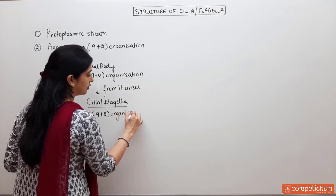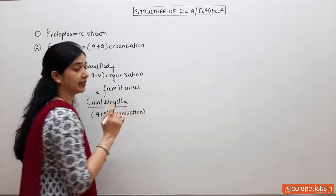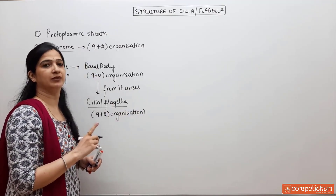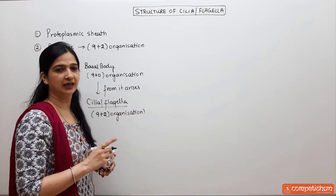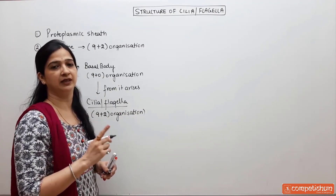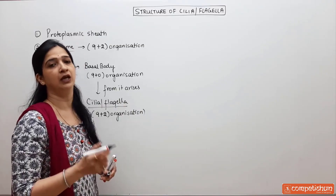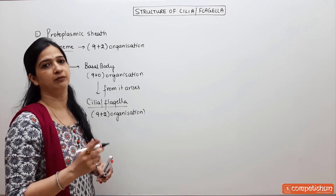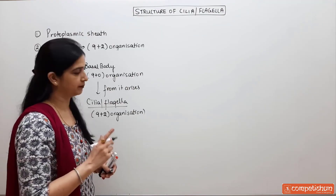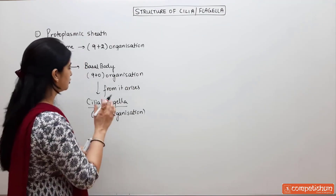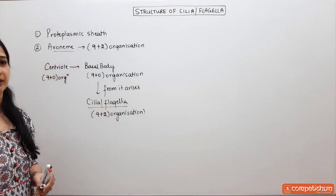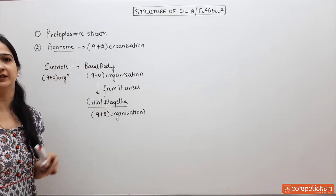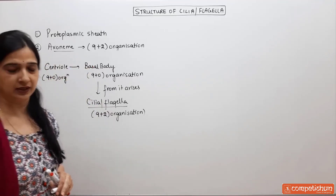Here we are talking about the eukaryotic flagella. In prokaryotes, there is no such organization; there will be a different organization. The prokaryotic flagella is made up of the flagellin protein. So here we are talking about the axoneme having the 9 plus 2 organization.